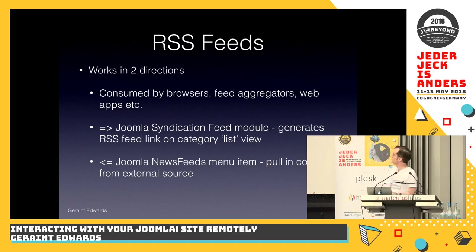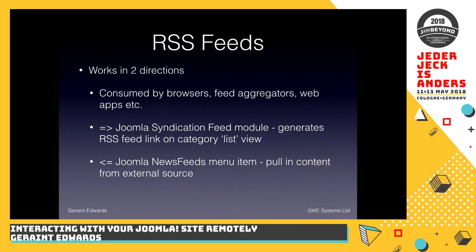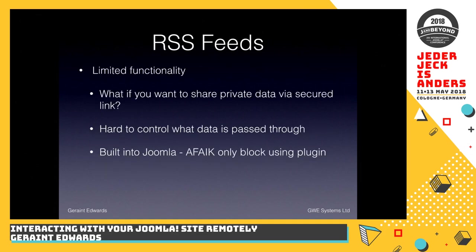Probably the simplest that people may have seen and used are RSS feeds. They're consumed by browsers, feed aggregators, web applications, and so forth. Joomla supports RSS feeds. From Joomla, you can create a Joomla syndication feed module — all that does is create a link on your site. When you're viewing content menu items, it'll give you a link to the RSS feed for that particular menu item. You can also pull feeds into Joomla to get data from third-party services using the Joomla news feeds menu item. But they have limited functionality — it's built into Joomla.